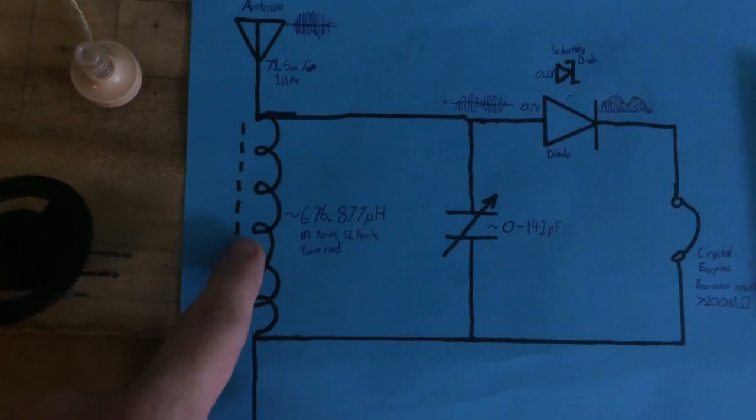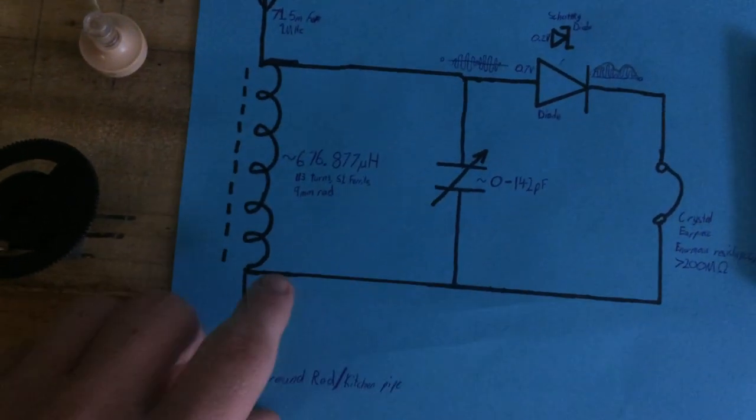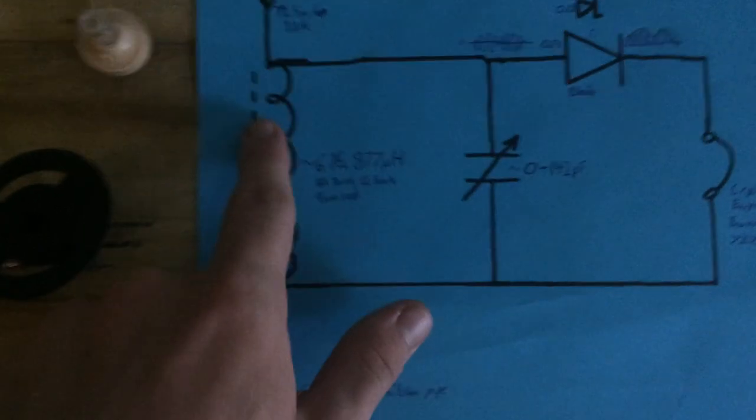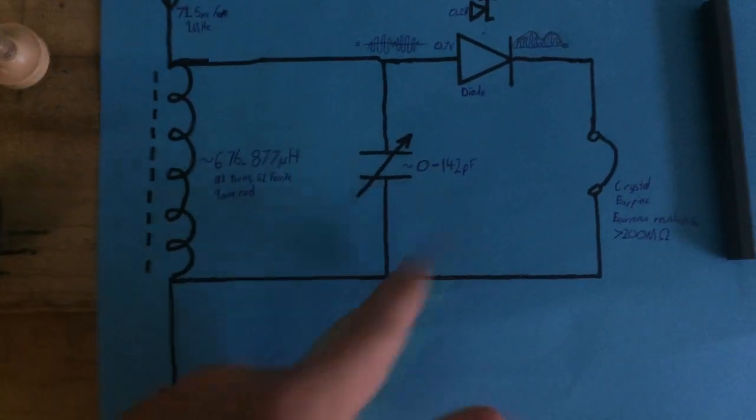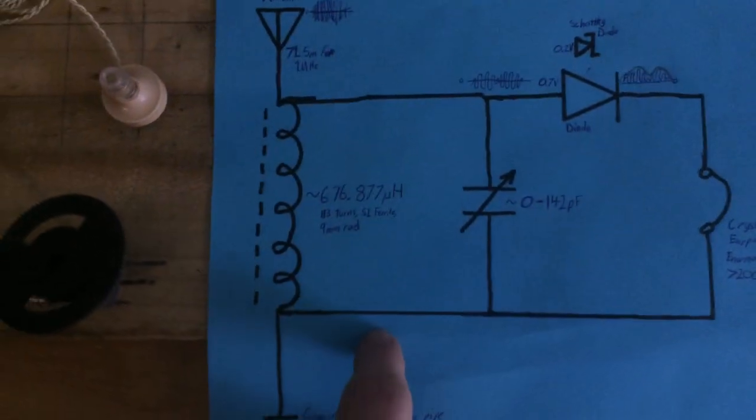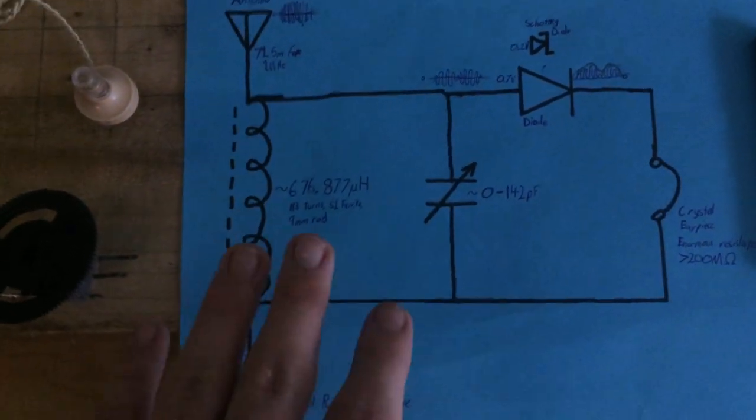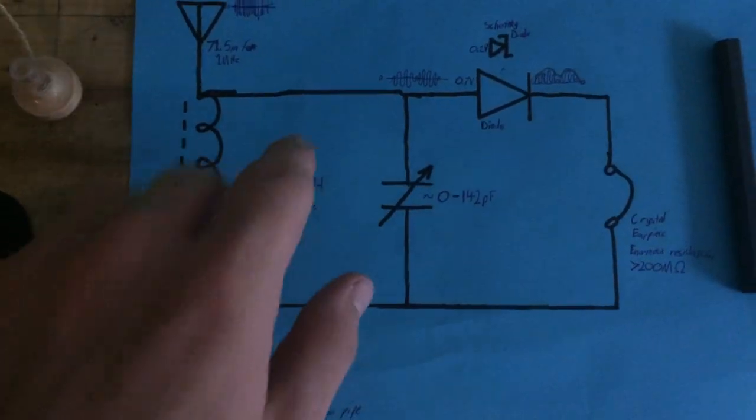And the inductor wants the current to keep flowing in this direction, and so it collapses its magnetic field back into charges, and charges the capacitor up on the other side. And so then these charges have to go somewhere, so it's going to go back around this way. And in a circuit with zero resistance, a perfect circuit that cannot exist, this would always keep oscillating at a particular frequency.